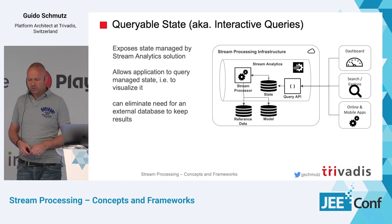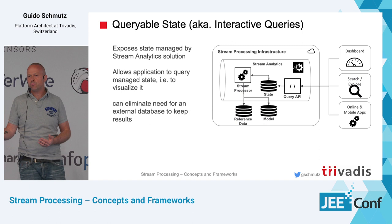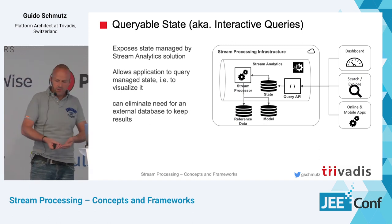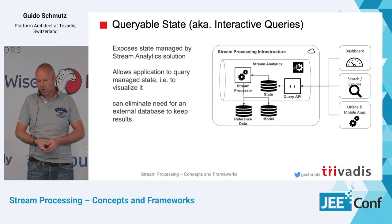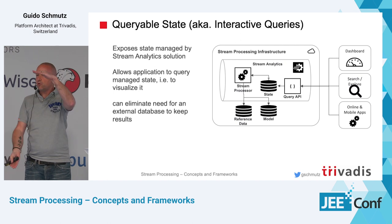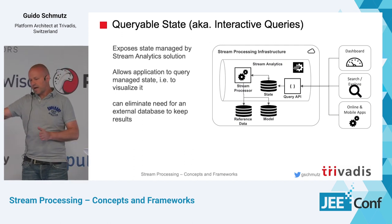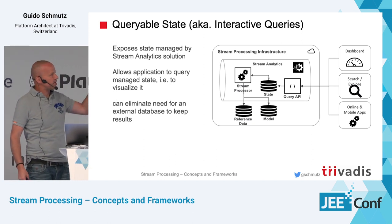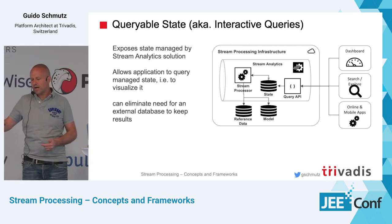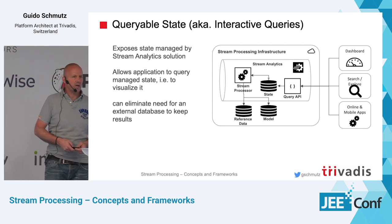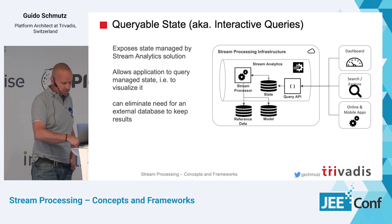If you have state, you can expose it externally — queryable state or interactive queries. For example, counting Twitter hashtags and offering a dashboard: instead of writing state to a NoSQL or relational database and having a dashboard query that, you can query the stream analytics state directly. This eliminates the extra store. Some tools offer this as a built-in capability.